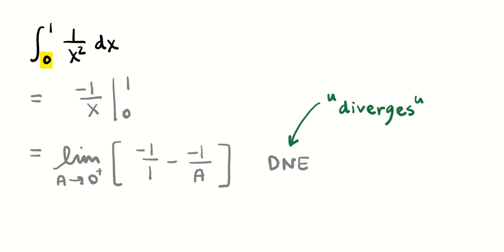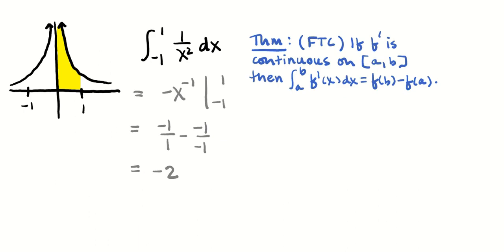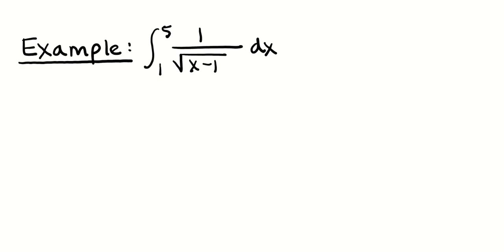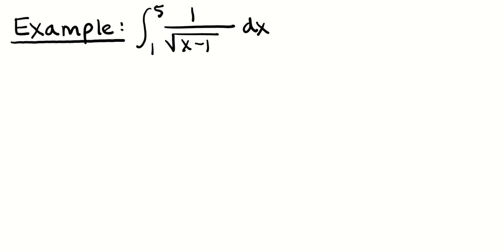This makes more sense because the limit is approaching positive infinity, which is the amount of area you'd expect under 1 over x squared between x equals 0 and x equals 1. But believe it or not, it's not always going to be an infinite amount of area when you're working up against a vertical asymptote. For example, the integral from 1 to 5 of 1 over the square root of x minus 1 dx — this one is going to be finite; that limit is going to exist.